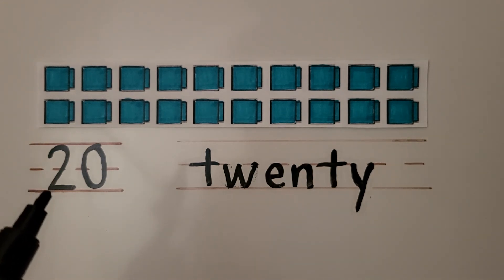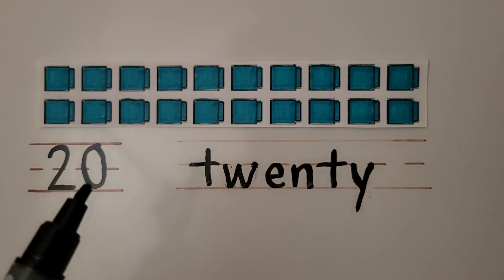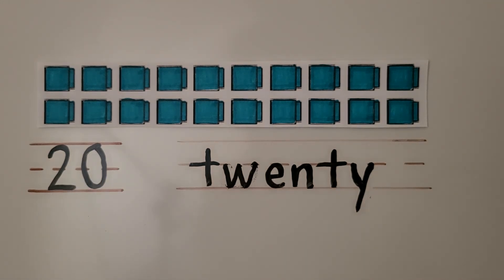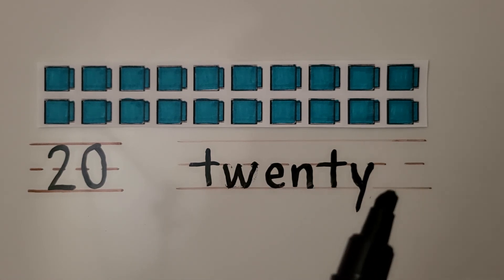This is the number 20. It's a 2 with a zero next to it. Here is the word twenty: T-W-E-N-T-Y.